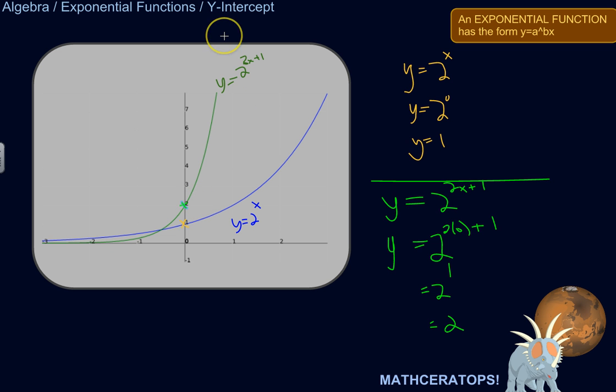If you want to find the y-intercept of anything, including an exponential function, set x to 0 and see what you get for y. That'll be your y-intercept.